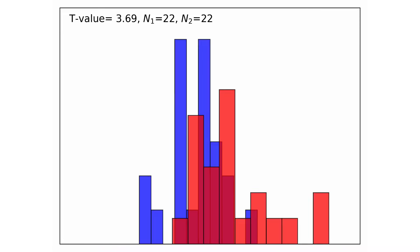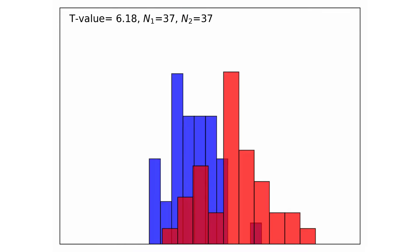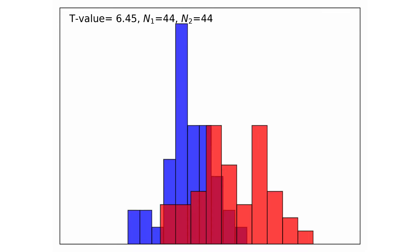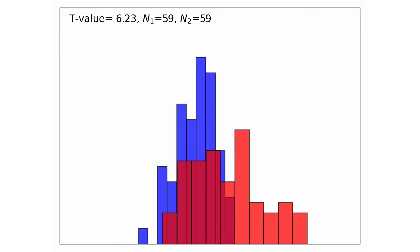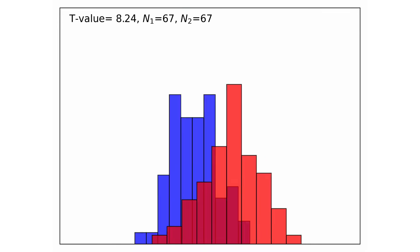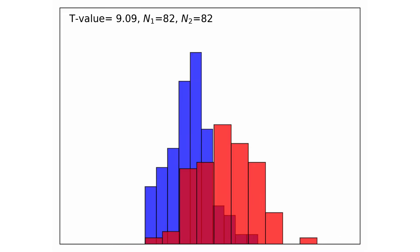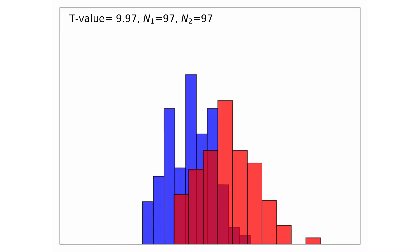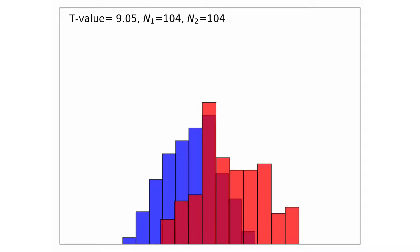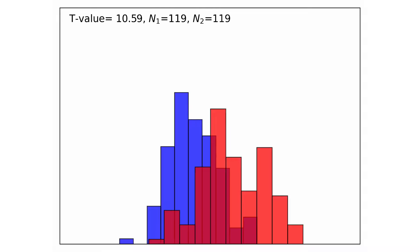Finally, we have the number of samples n1 and n2, and here as well we can see that they directly affect the t-value, which makes perfect sense since the more samples we have, the more confident we should be in our statistics.